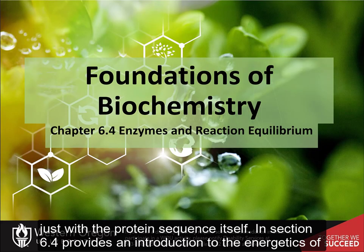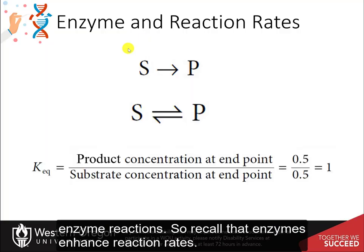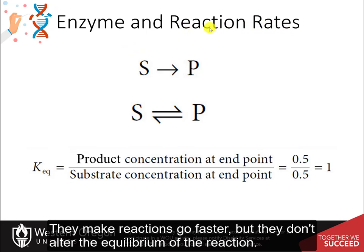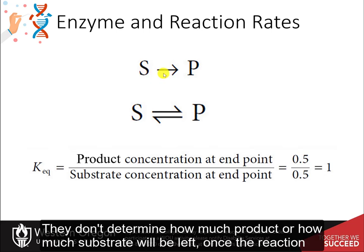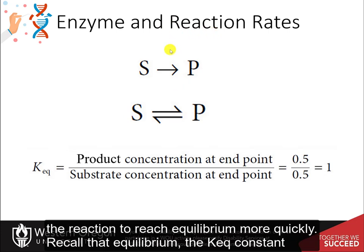Section 6.4 provides an introduction to the energetics of enzyme reactions. Recall that enzymes enhance reaction rates — they make reactions go faster — but they don't alter the equilibrium of the reaction. They don't determine how much product or how much substrate will be left once the reaction reaches equilibrium; they will just get the reaction to reach equilibrium more quickly.